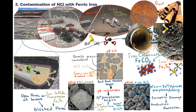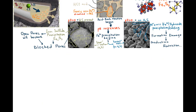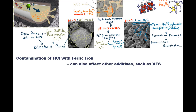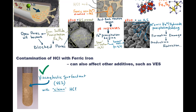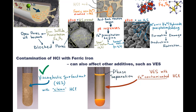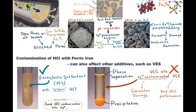Therefore, to successfully apply HCl in matrix stimulation, we must properly prepare for delivery and injection of the acid. This may require removal of rust and inorganic scale prior to the treatment. Otherwise, we might end up with iron sulfide and ferric hydroxide precipitation damage. Aside from precipitation issues, presence of ferric iron in HCl is very undesirable because it may negatively affect different additives. For example, contaminated HCl may cause phase separation and even precipitation of viscoelastic surfactants, causing formation damage while cancelling VES performance. When designing well stimulation using HCl, we should take measures to avoid contamination with ferric iron.